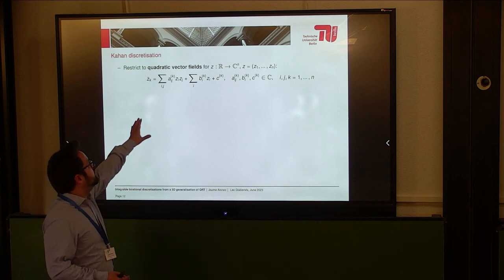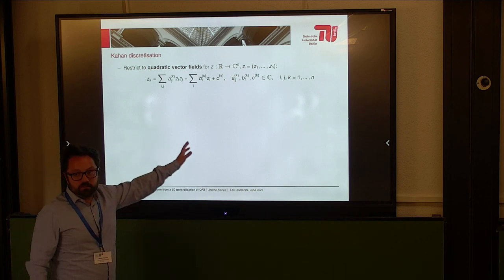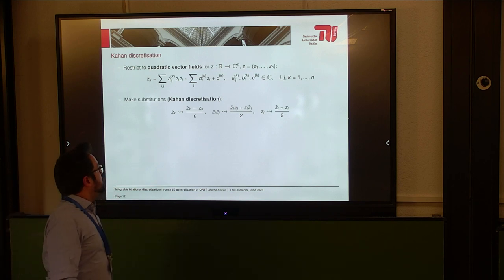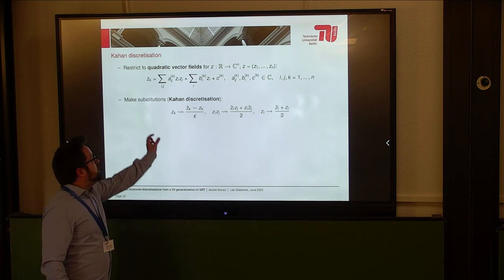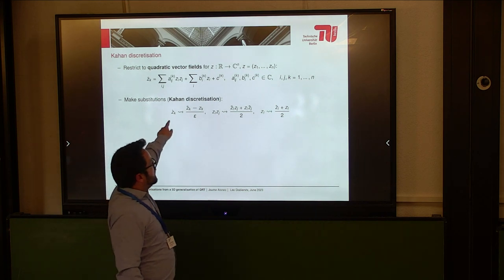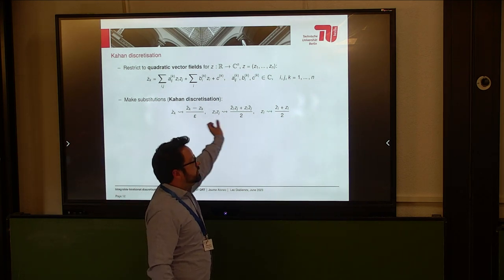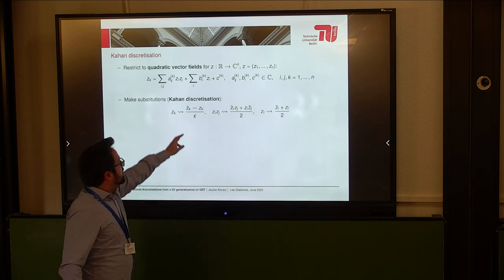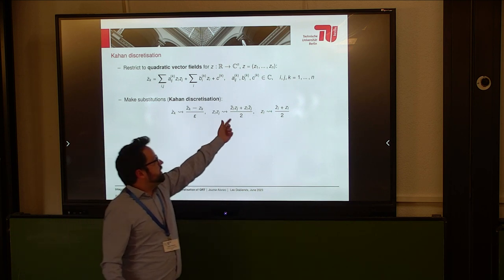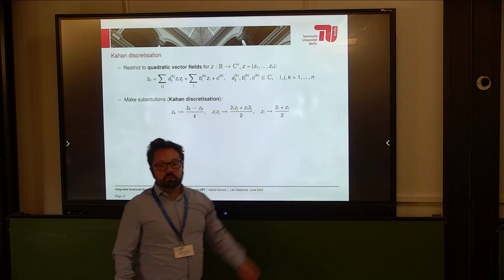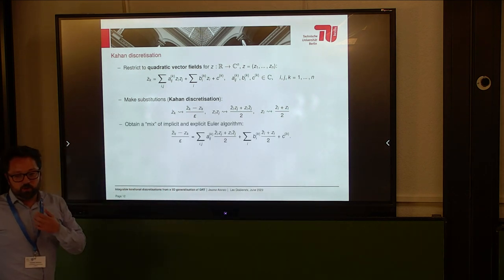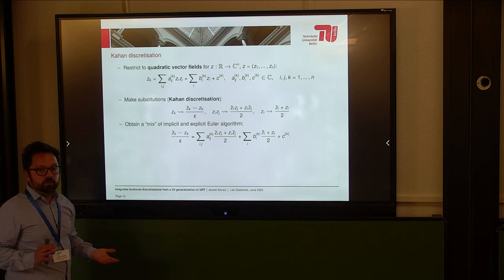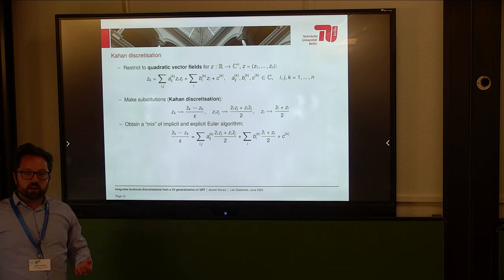There are many discretization methods we learn at school, and typically all of them are disastrous when applied to integrable systems. But we found one that was a bit forgotten that works better than all the others. One limitation is that the original method only works for quadratic vector fields — but that's a simple enough problem. You do this substitution: on the left you have the continuous setting, and on the right how you discretize it. It's very symmetric and linear in both equations — a sort of mix of implicit and explicit Euler algorithm, part of the Runge-Kutta family with certain parameters.